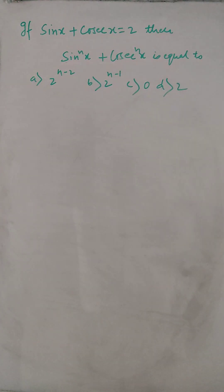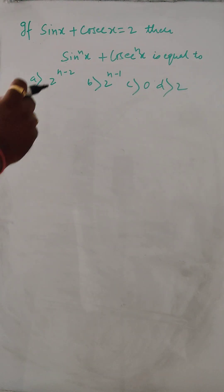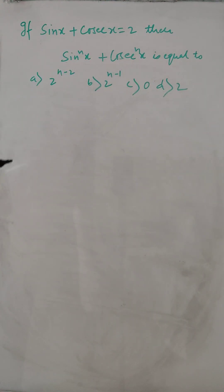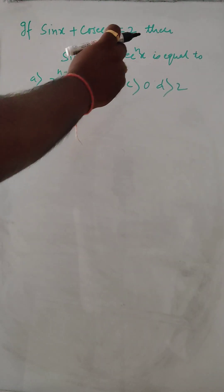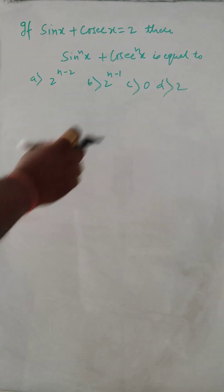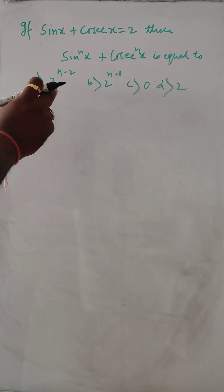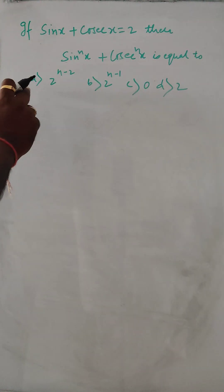Hello, so today we are going to solve this problem. Here given is sin x plus cosec x is equal to 2. Then we have to find sin to the power n x plus cosec to the power n x is equal to either one of the answer will be correct.